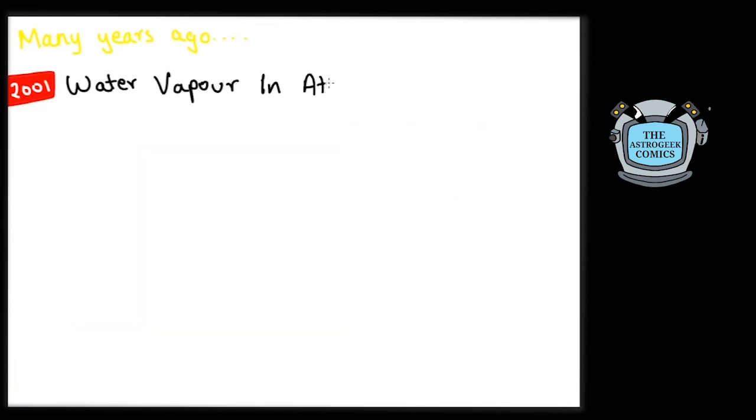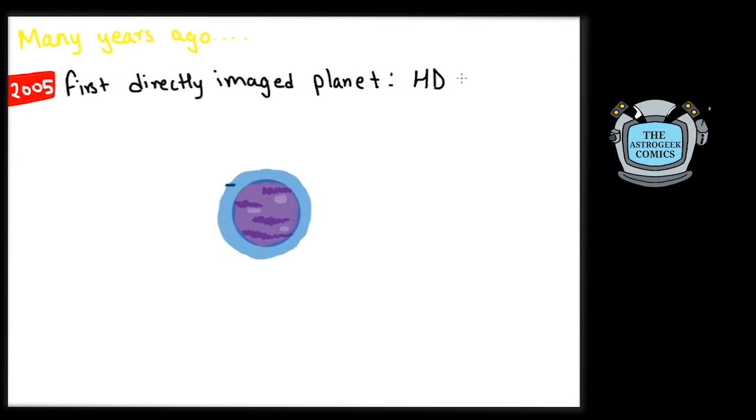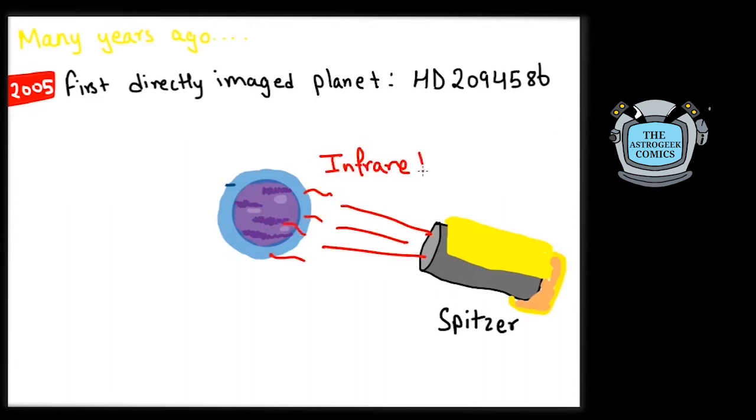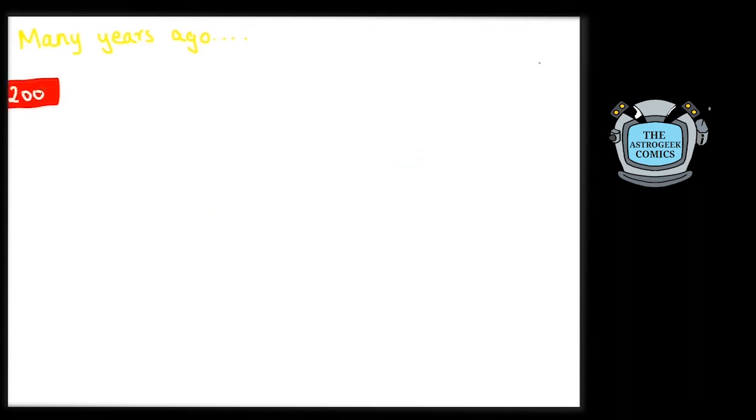In the same year, the first atmospheric measurement for an exoplanet was made when HD 209458 b showed the presence of water vapor. The same planet made another record in 2005 when it became the first planet whose light was directly observed.